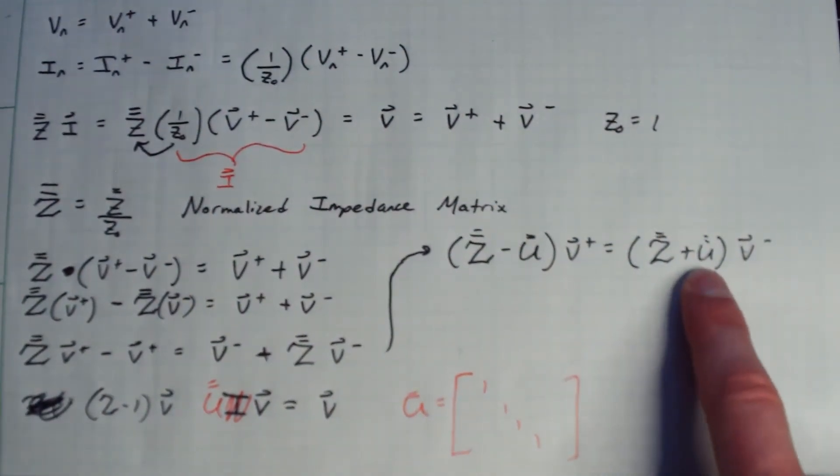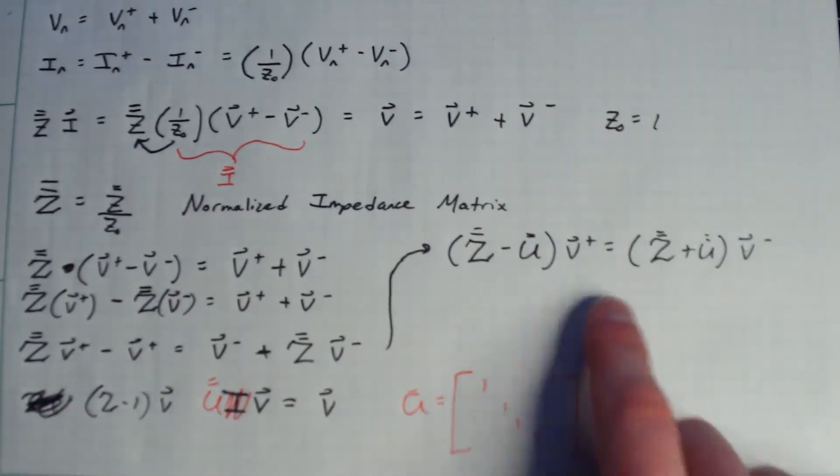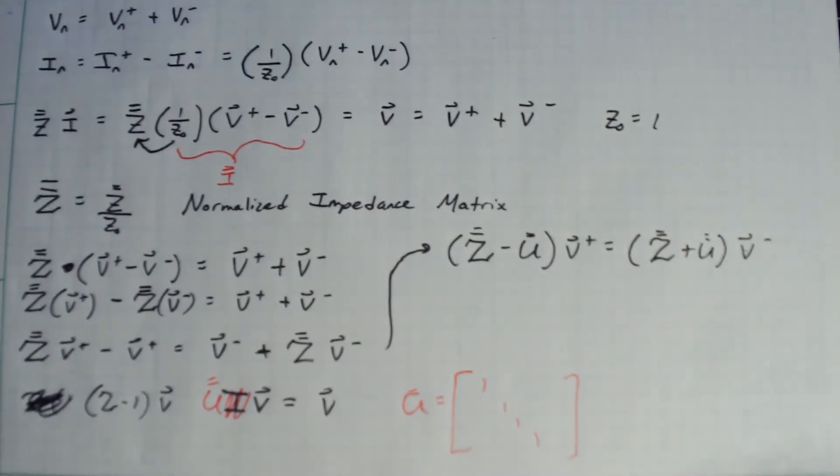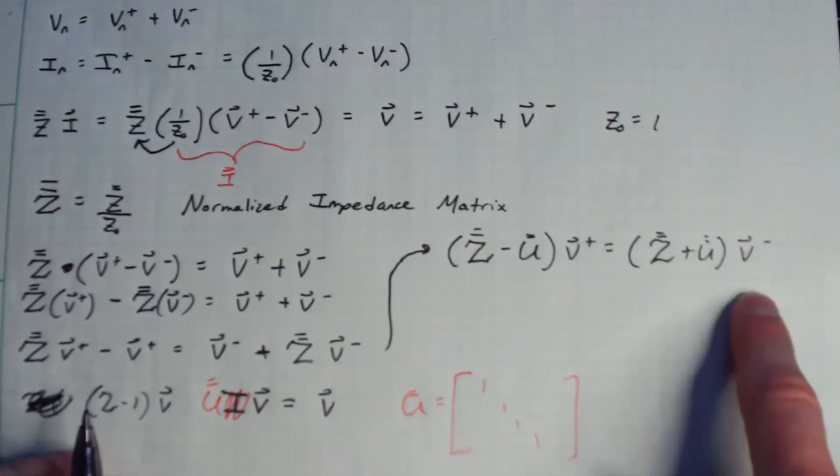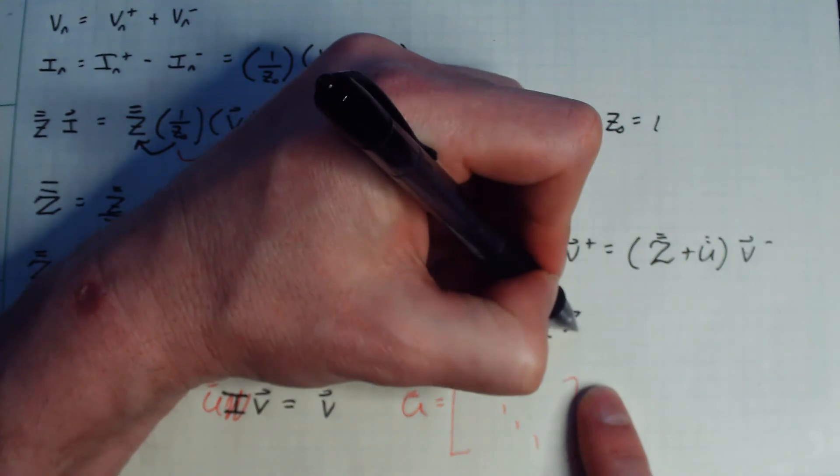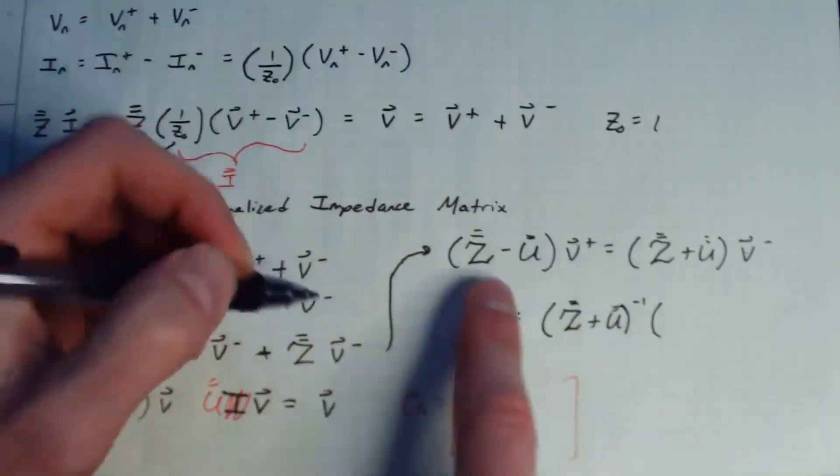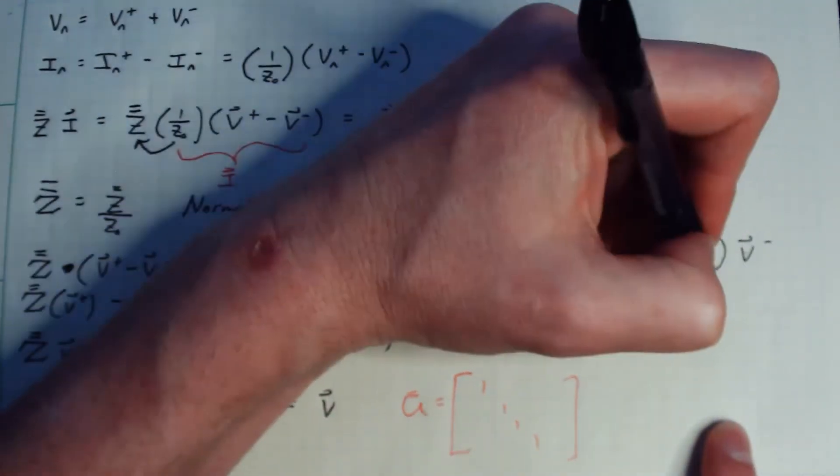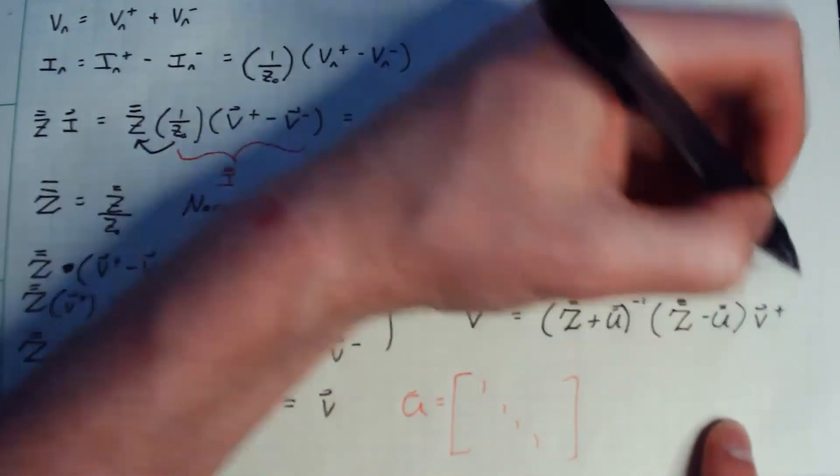Okay, so remember, when you're doing matrix vector arithmetic, you're not, the U here is the equivalent of a one, right? And so now I'm going to solve for V minus because that was part of our definition for the scattering matrix, right? V minus is equal to my scattering matrix times V plus. So I'm just going to solve for V minus here and you get essentially V minus is equal to, I'm just going to rearrange a bit. I will get Z plus U, so those are matrices, and I get inverse times Z minus U matrices times V plus like so.